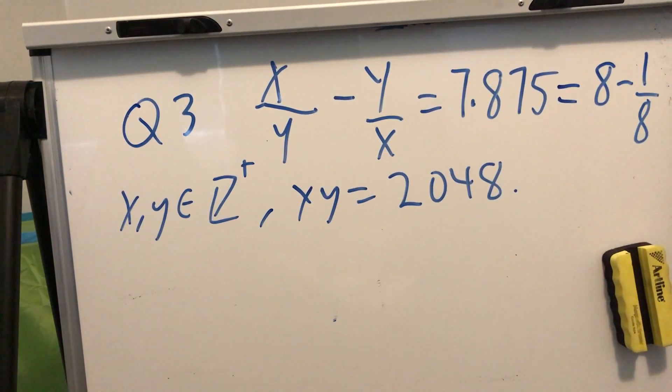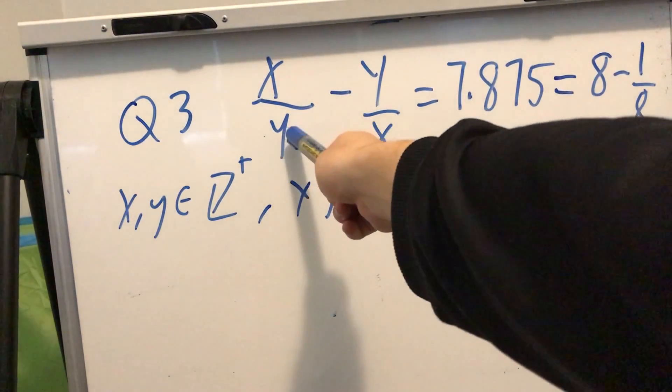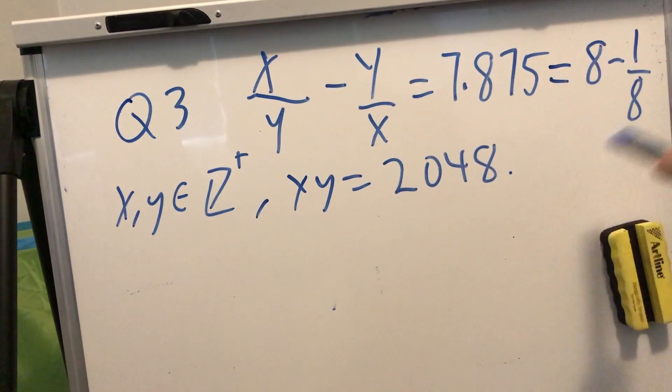The reason that's in tune with the question is because x/y and y/x are reciprocal to each other, so that's eight and minus an eighth.